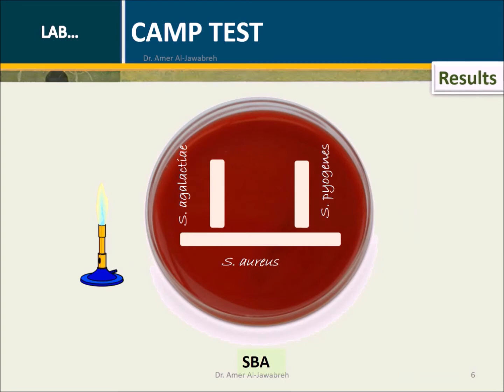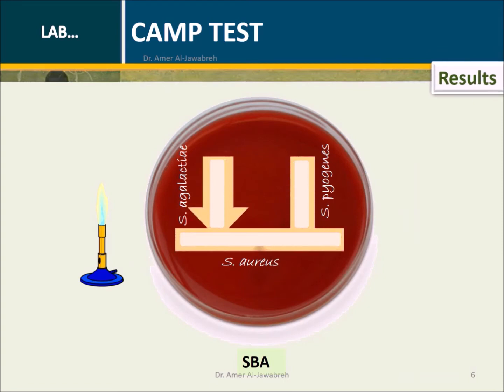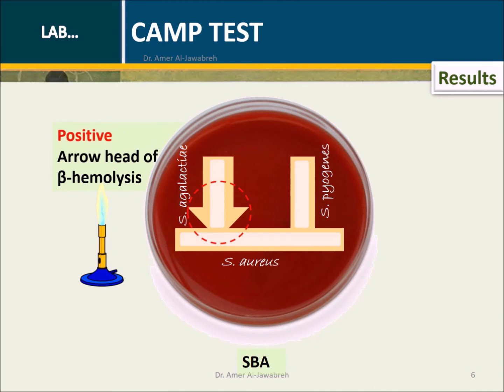Results: Arrowhead beta-hemolysis at the junction between Staphylococcus aureus and Streptococcus agalactiae indicates a positive result. No arrowhead hemolysis indicates a negative result.